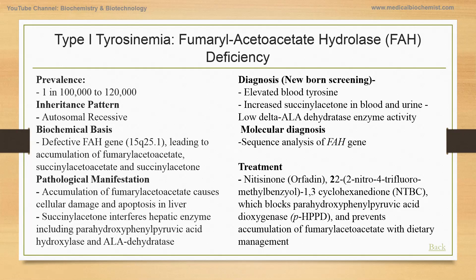Diagnosis is done by measuring blood tyrosine level — elevated blood tyrosine is suggestive of type 1 tyrosinemia. In addition, there is increased succinylacetone in blood and urine, and other amino acids are also increased. The diagnosis is confirmed using sequence analysis of the fumarylacetoacetate hydrolase gene.